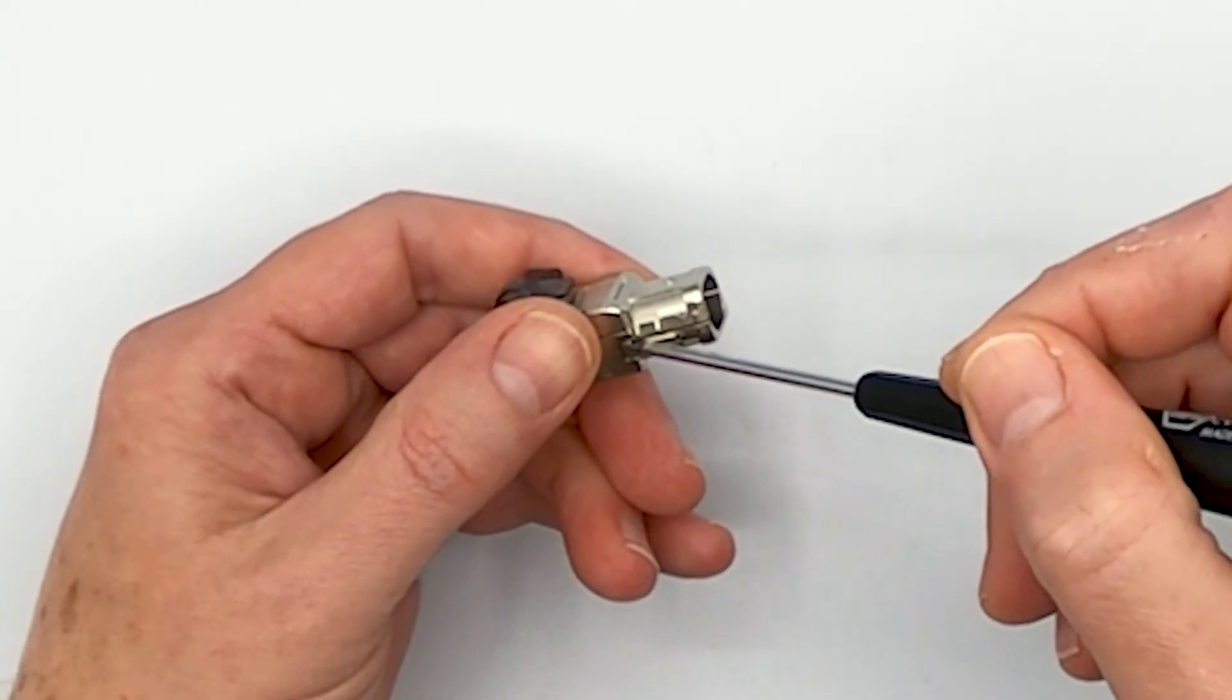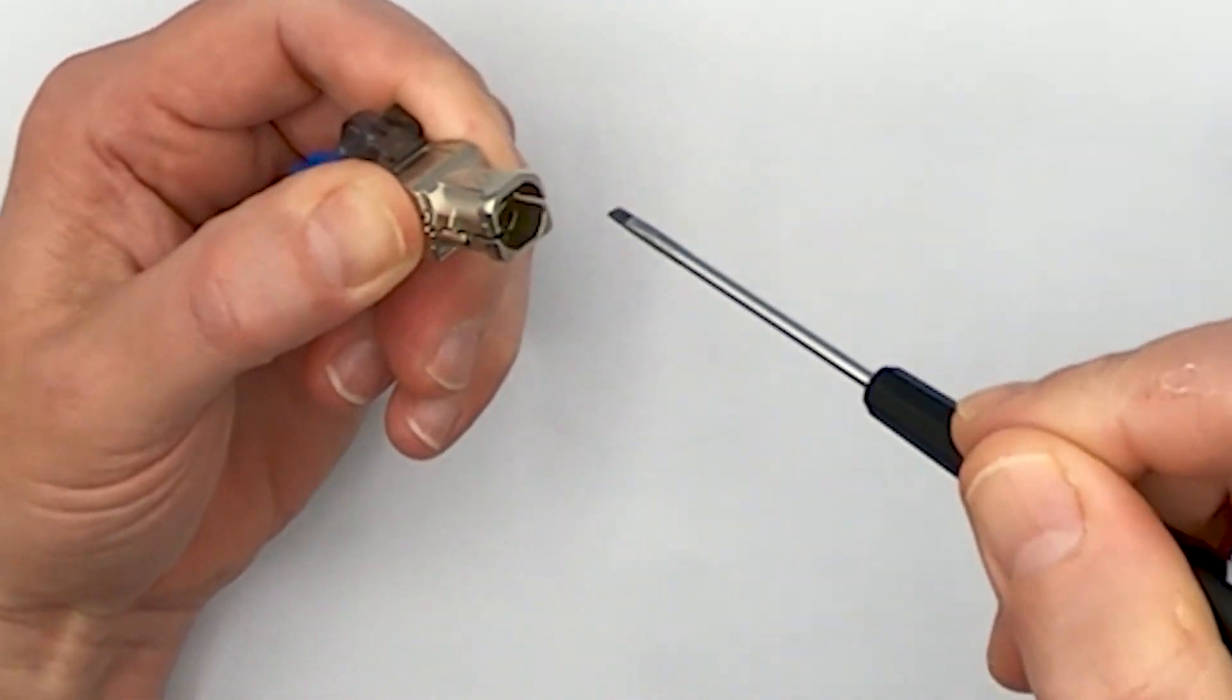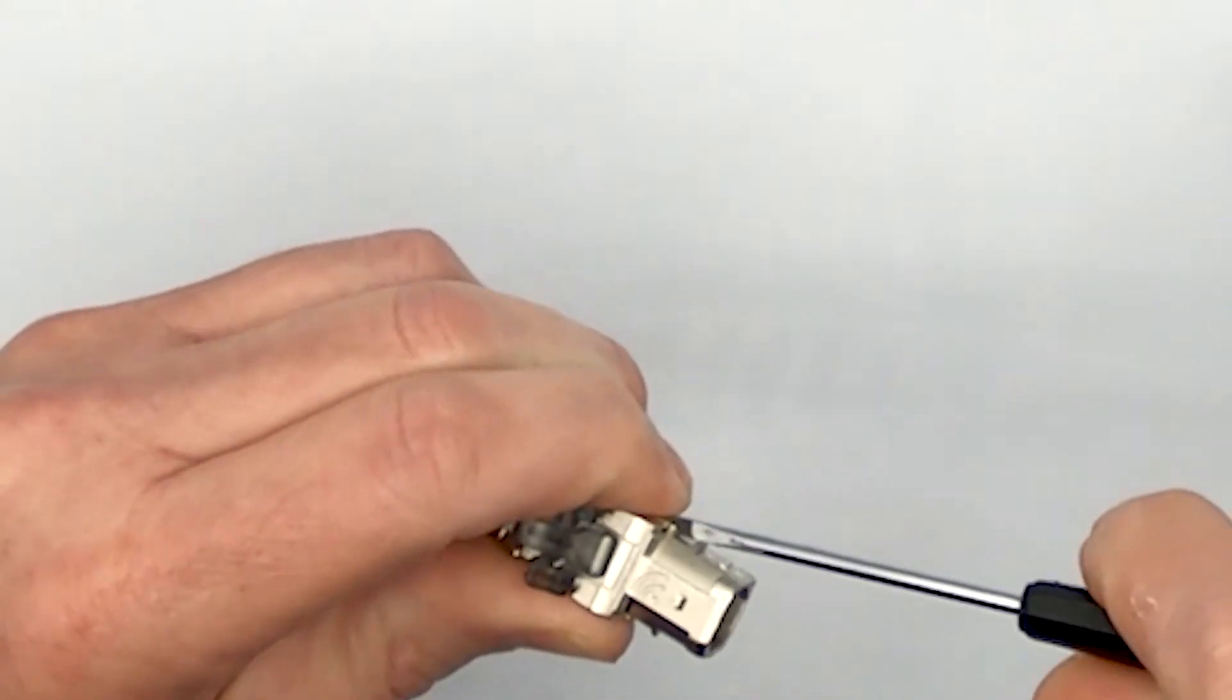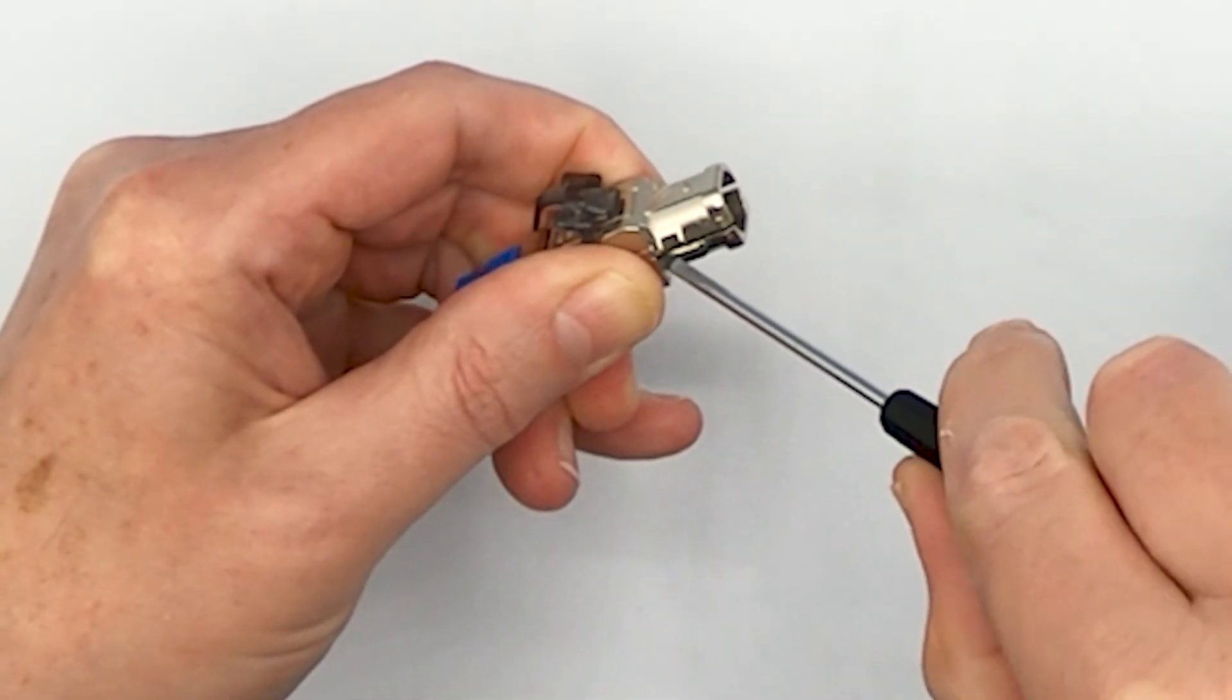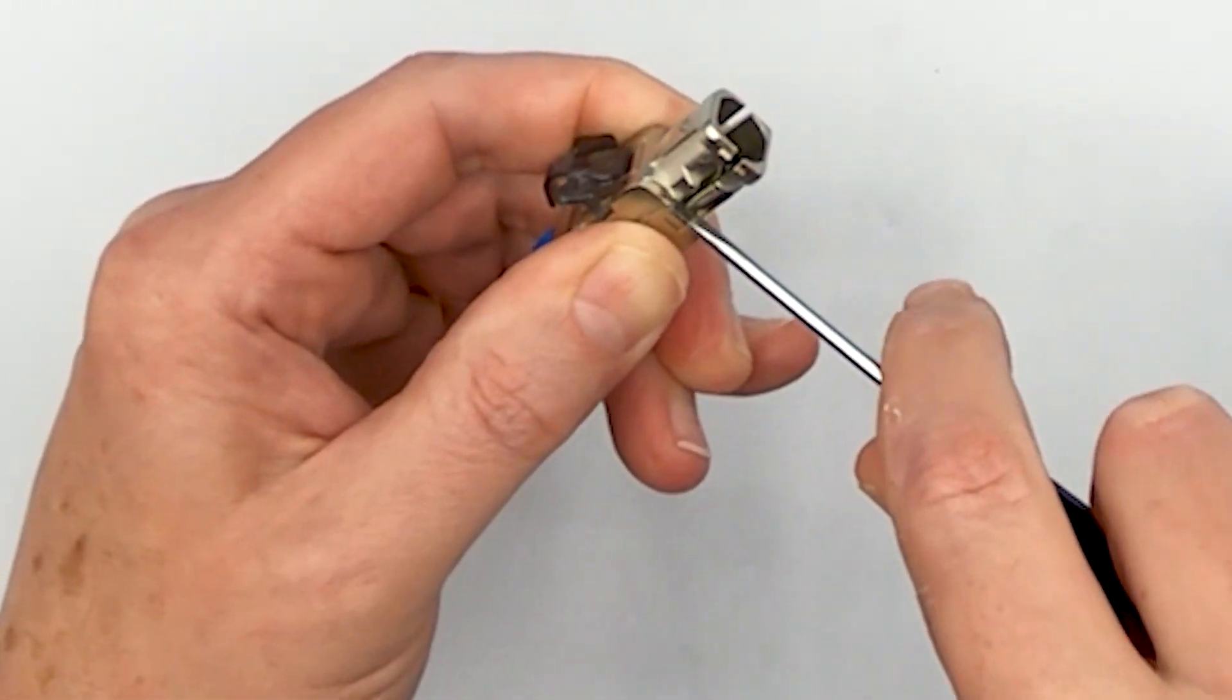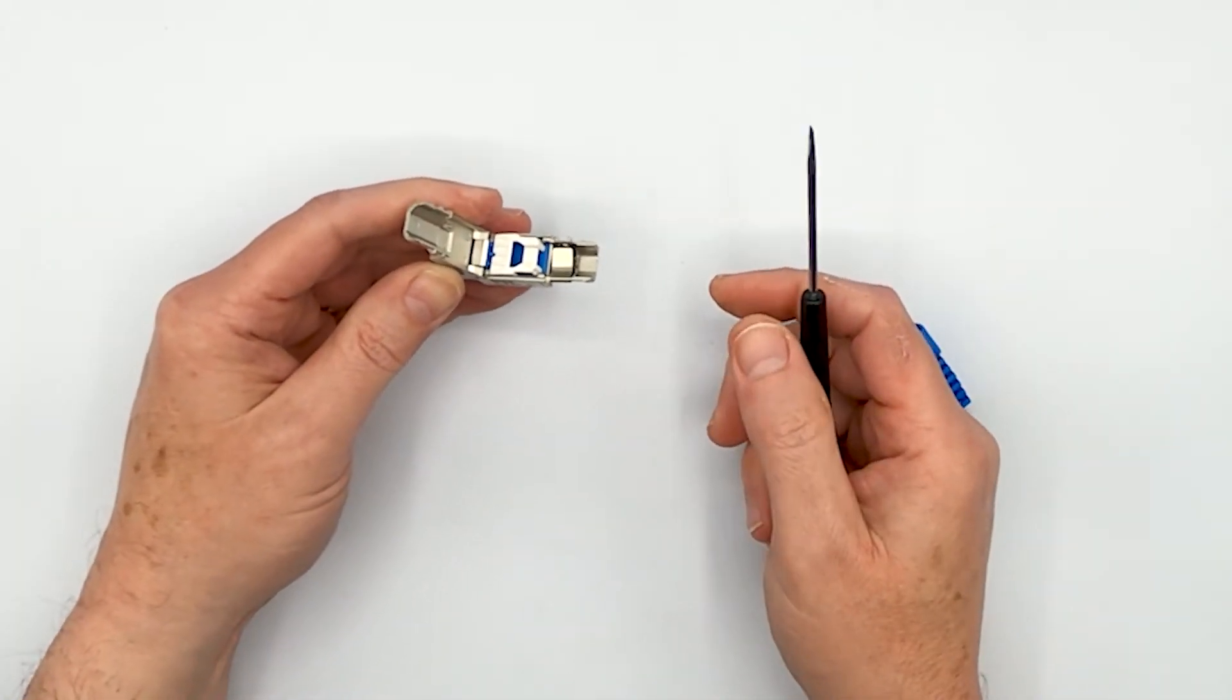And all you're going to do is you're going to come in here and you're going to use a little bit of leverage and pop it from one side and then get in here and pop it from the other side. And just simply turn your screwdriver upward. May have to do it a couple of times on both sides. And then your field termination plug will come undone after a couple of tries. There we go. And there we go.